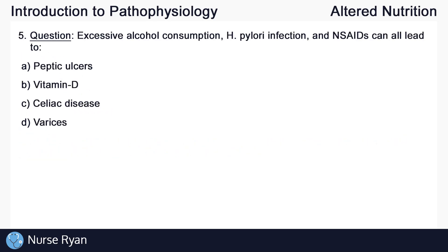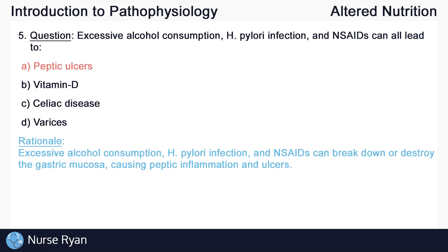Question number five: excessive alcohol consumption, H. pylori infection, and NSAIDs can all lead to? The answer is A, peptic ulcers. Excessive alcohol consumption, H. pylori, and NSAIDs can all break down or destroy the gastric mucosa, causing peptic inflammation and ulcers.